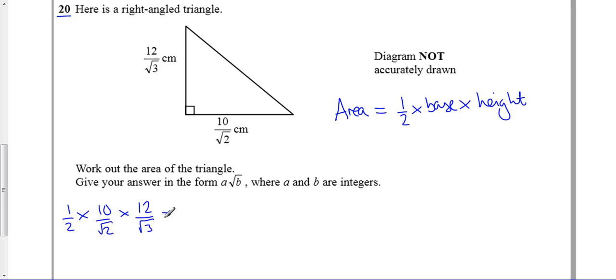which is really, well half of 10 is just 5, so we have 5 over root 2 times by 12 over root 3. Multiply fractions, we just multiply denominators which just gives us 60 over root 6.